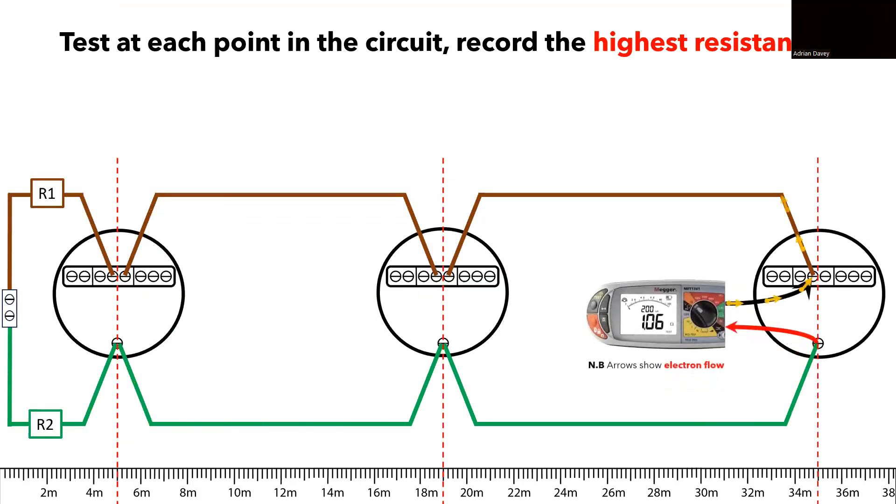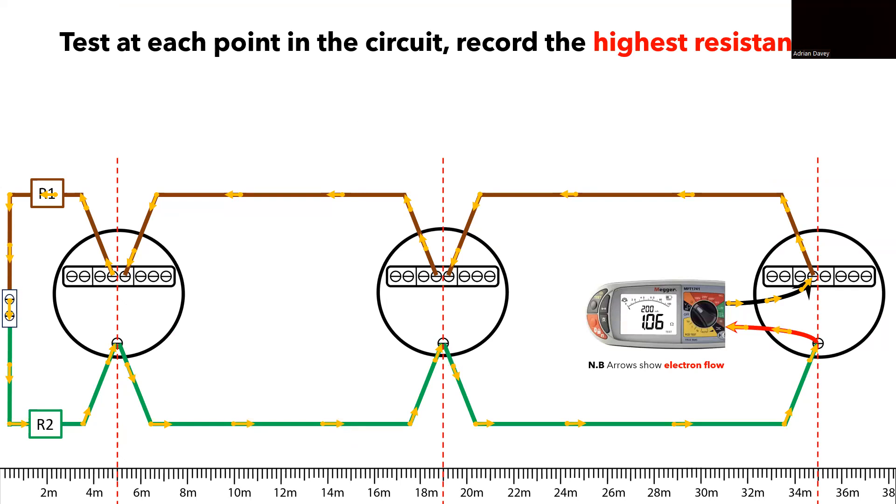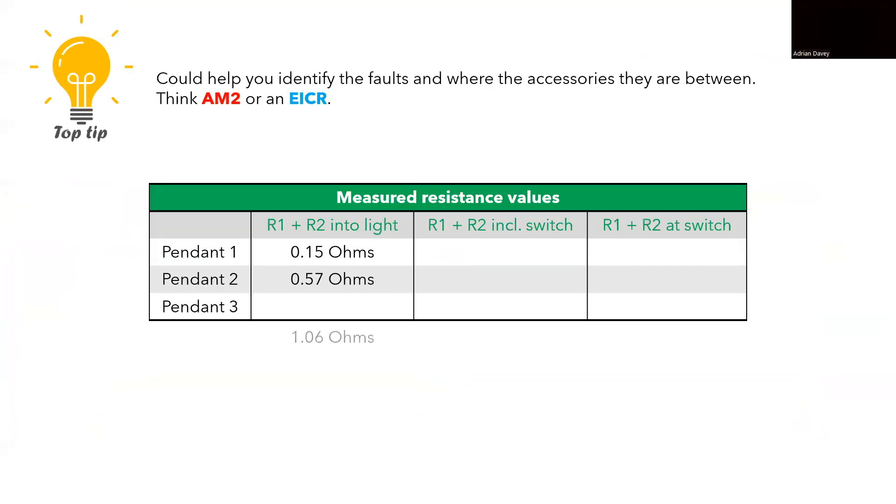Finally, we arrive at the last point in the circuit where we encounter the longest width, resulting in a reading of 1.06 ohms on our MFT. For the last distance, which is 35 meters, the calculated value is approximately 1.057 ohms, which we can round up to 1.06 ohms. We've now successfully confirmed that the supply remains uninterrupted throughout the entire circuit, extending to the last point. We should now include this measured value in our results table.